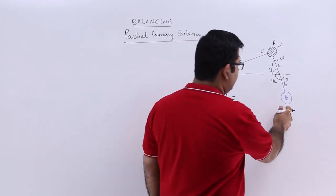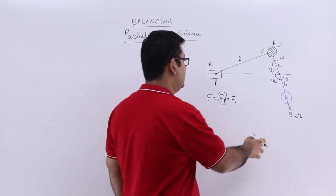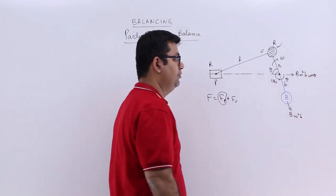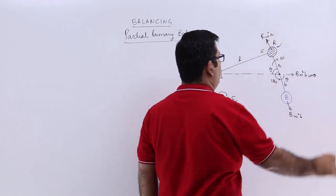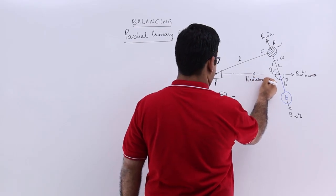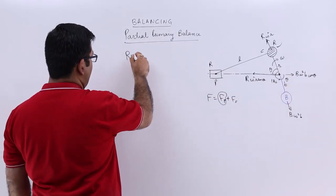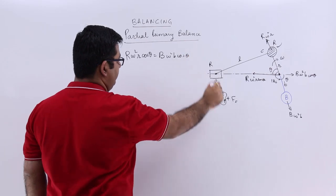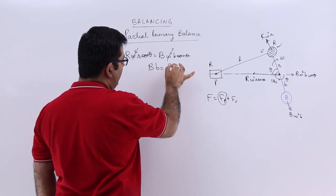If you take the cos component of this, capital B omega square b is the centrifugal force due to the rotation of this mass. The cos component would be B omega square b cos theta. And the cos component of the centrifugal force for this, which is r omega square small r, would be in this direction: capital R omega square small r cos theta. So you can equate them and get rid of omega square cos theta. You will be left with B into small b equals R into small r.